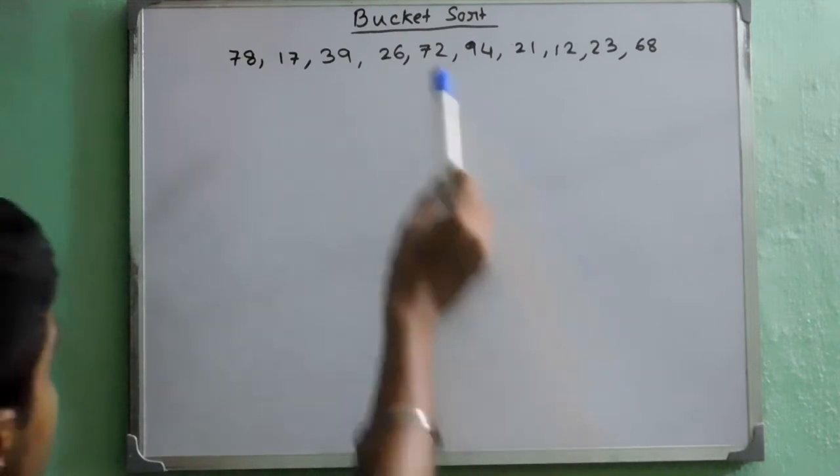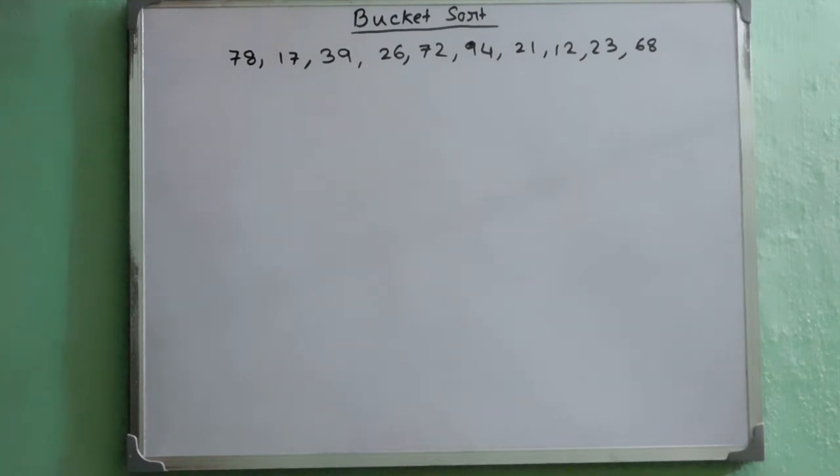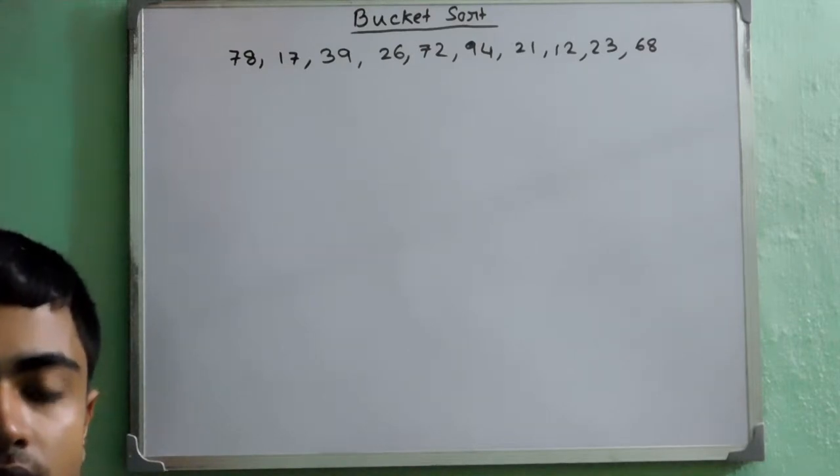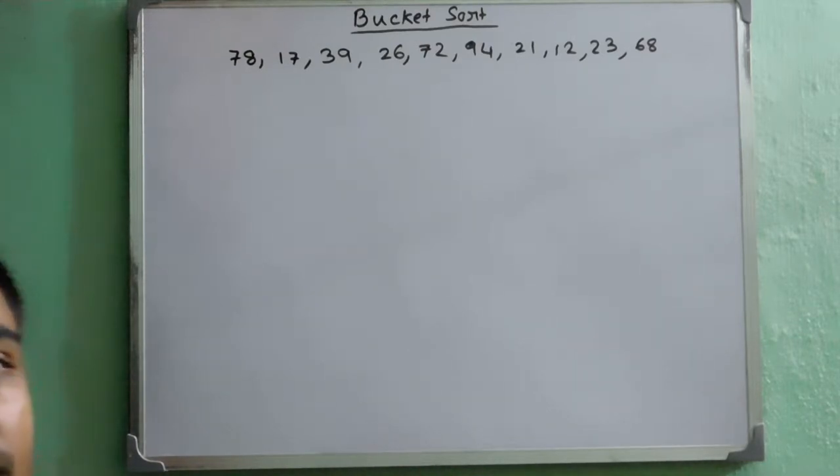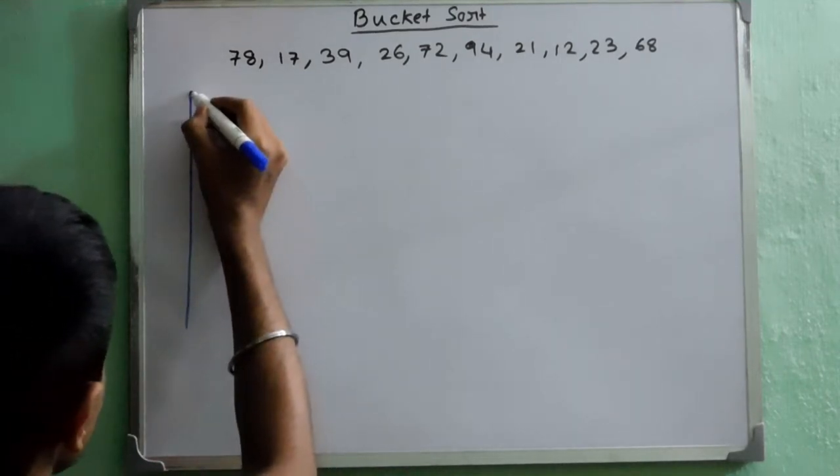Now as you have noticed earlier that the name of the sorting technique is Bucket. Now what we will do is we will create some buckets, indexing from 0 to 9. Let's create the buckets.